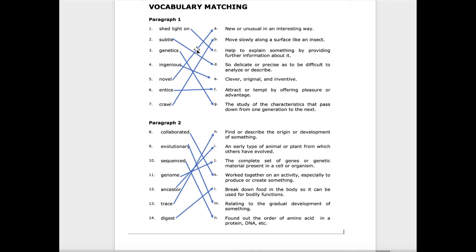Novel is A: new or unusual in an interesting way. Entice is F: attract or tempt by offering pleasure or advantage. Crawl is B: move slowly along a surface like an insect. Paragraph 2: collaborated is K: work together on an activity, especially to produce or create something.